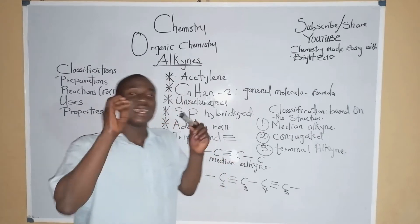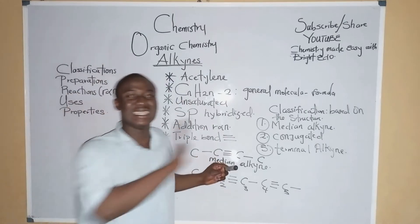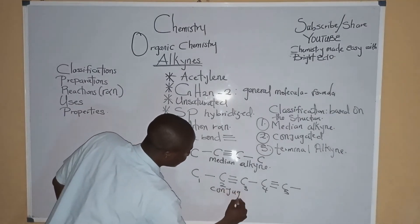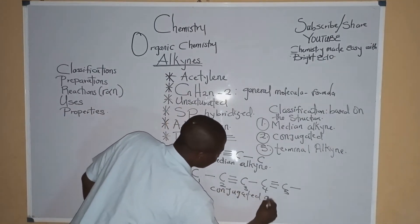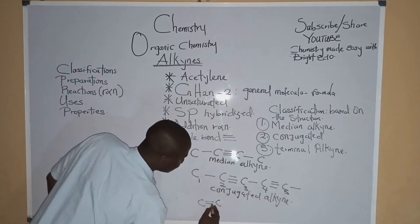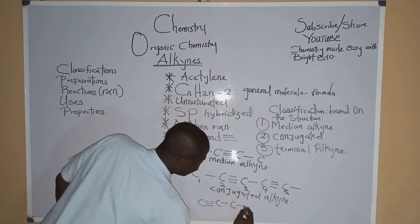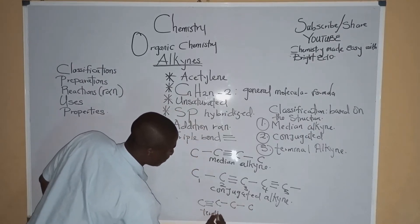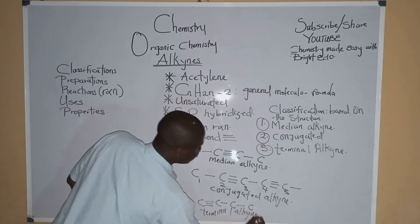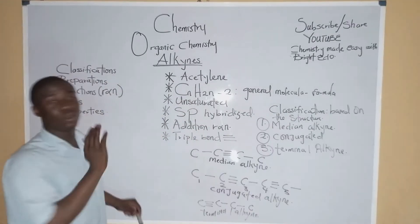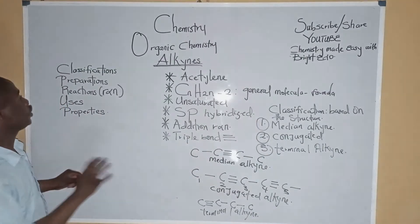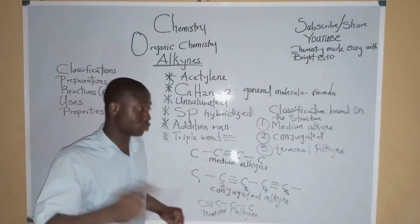For terminal alkynes, these are alkynes whereby the triple bond is found at the end of the compound. This is the classification of alkynes based on their structure.